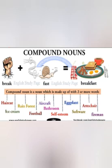Compound nouns are formed by putting two words together. The two words ko saath mein rakhke jo naya word bantah hai, that comes under compound nouns. For example: grass plus hopper equals grasshopper, tooth plus ache equals toothache, bed plus room equals bedroom, sun plus shine equals sunshine.